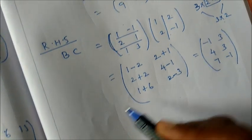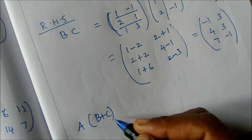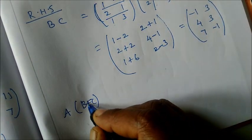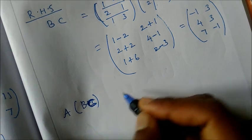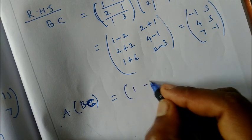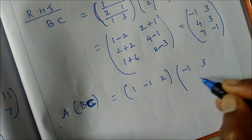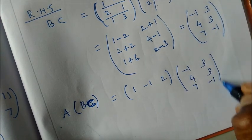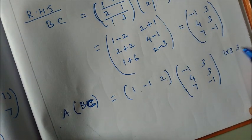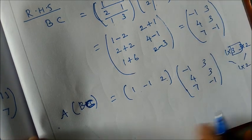Now compute A(BC). A is [1,−1,2] (1×3 matrix) and BC = [−1,3; 4,3; 7,−1] (3×2 matrix). Check order: A has 3 columns and BC has 3 rows — same, so multiplication is possible, forming a 1×2 matrix.